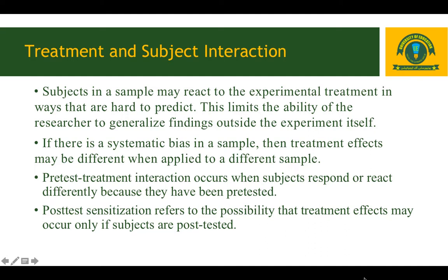If intact groups are randomly assigned, the possibility exists that the experimental group is in some important way different from the control group and from the larger population. This non-representativeness may result in selection-treatment interactions, such that the results of a study hold only for the groups involved and are not representative of the treatment effect in the independent population. If there is a systematic bias in a sample, treatment effects may be different when applied to a different sample. Pre-test treatment interactions occur when subjects respond differently because they have been pre-tested. Post-test sensitization refers to the possibility that treatment effects may occur only if subjects are post-tested.